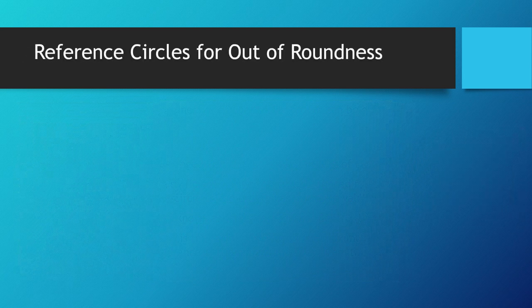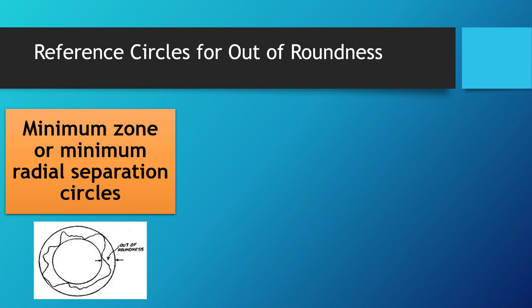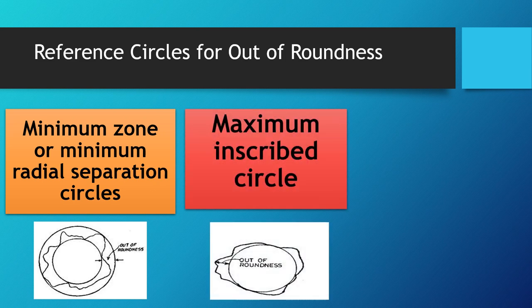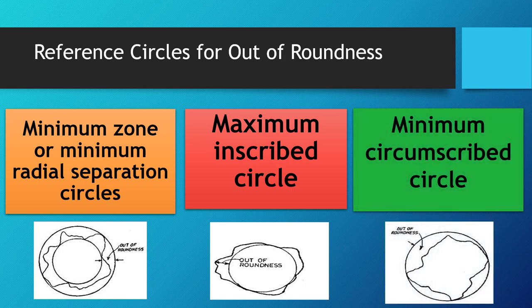Other reference circles include the minimum zone or minimum radial separation circles — two concentric circles that enclose the profile with minimum radial separation, where the out-of-roundness is the radial distance between the two circles. The maximum inscribed circle is the largest circle that can be drawn inside the profile without cutting it, and out-of-roundness is the height of the largest peak above the circle. The minimum circumscribed circle is the smallest circle that encloses the profile, and out-of-roundness is the distance of the lowest valley from this circle.